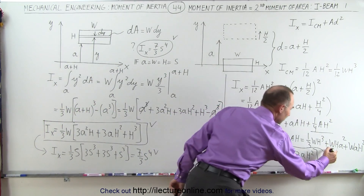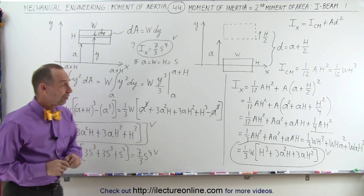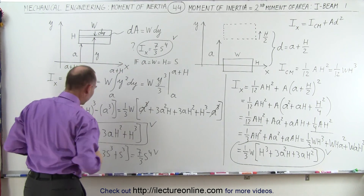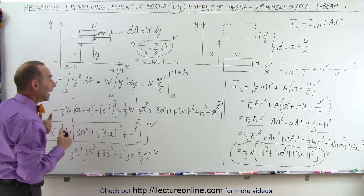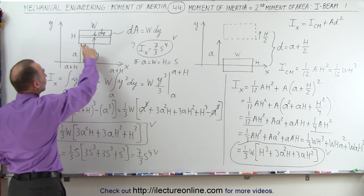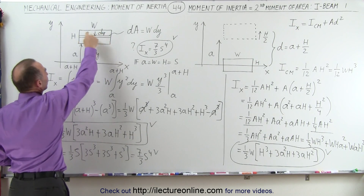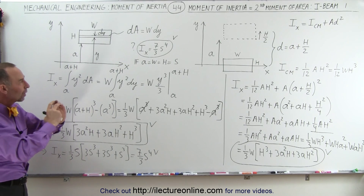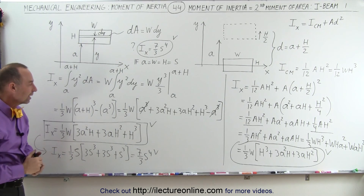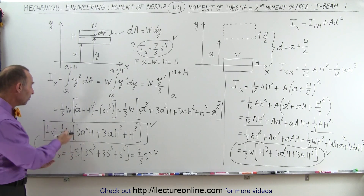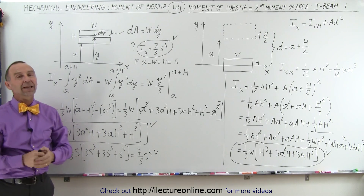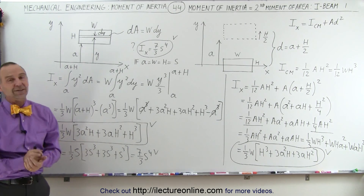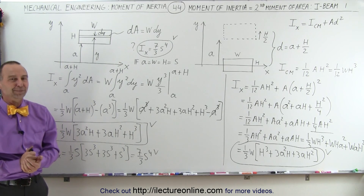That looks exactly the same, which means we used two different methods to find the moment of inertia of a section of an I-beam away from the x-axis relative to the x-axis, and we got the same result. Additionally, assuming a distance S away and making it a square S by S, we get the same result from the previous video. So that looks good. Now we have the moment of inertia of a section of an I-beam, and next we can find the total moment of inertia of an I-beam relative to the x-axis. Stay tuned — we'll show you how to do that. Thank you.